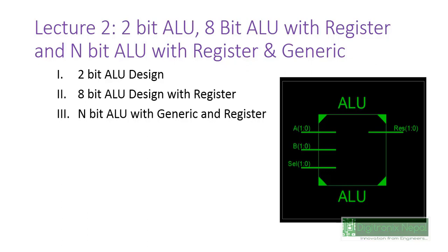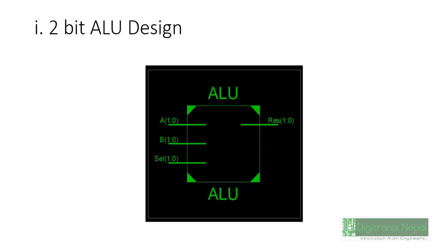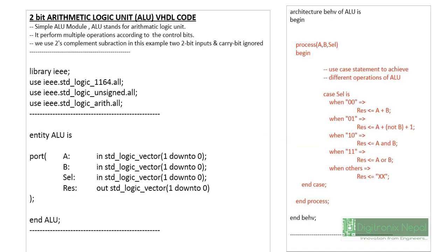In Lecture 2, we cover the 2-bit ALU, 8-bit ALU with register, and N-bit ALU with register and generic. The 2-bit ALU takes two 2-bit inputs — A and B — performs a 2-bit operation, and gives a result in 2-bit format. As seen in the block diagram, we have inputs A and B (each 2-bit), a 2-bit selection line, and a 2-bit result output.